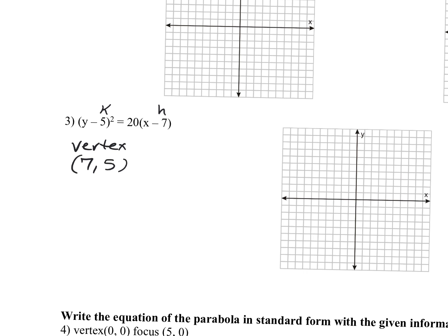Now, in order to get my focus and my directrix, I need to find the value of p. The value of p is found by taking the number in front of the non-squared variable and setting it equal to 4p. So 4p equals 20. Dividing both sides by 4, p equals 5.